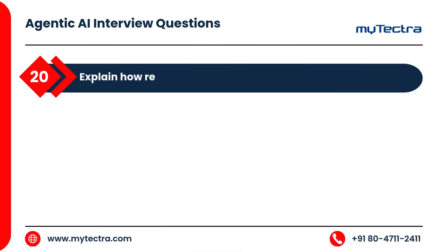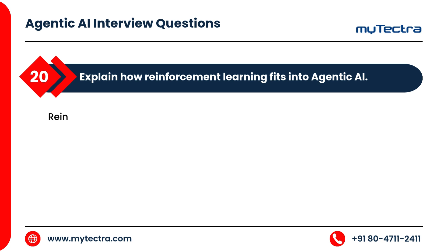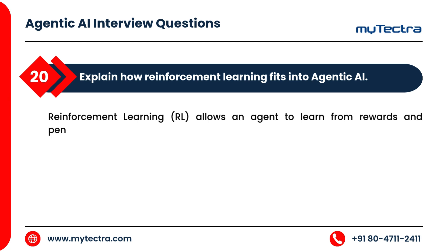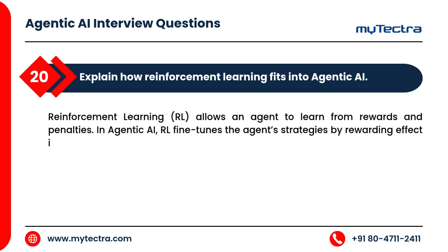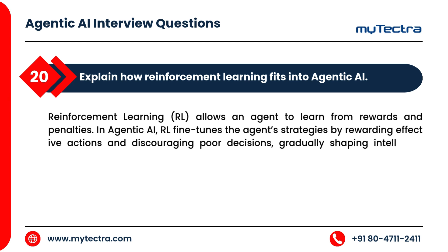Explain how reinforcement learning fits into agentic AI. Reinforcement learning allows an agent to learn from rewards and penalties. In agentic AI, RL fine-tunes the agent's strategies by rewarding effective actions and discouraging poor decisions, gradually shaping intelligent, goal-aligned behavior.